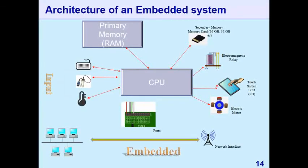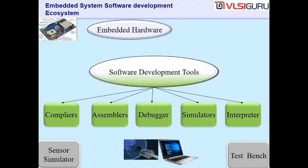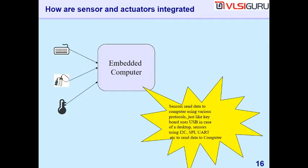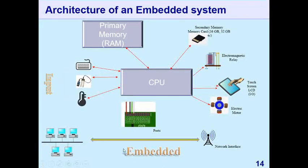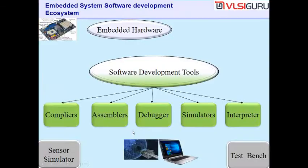Apart from a keyboard, an embedded computer may have a set of sensors and actuators connected to it. A keyboard or mouse connects via USB; a display connects via VGA or HDMI. For touch screens, electric motors, and electromagnetic relays, sensors and actuators are normally connected through GPIO ports of the embedded computer.